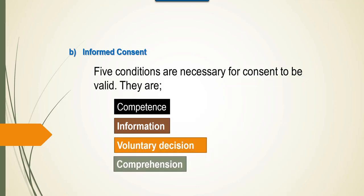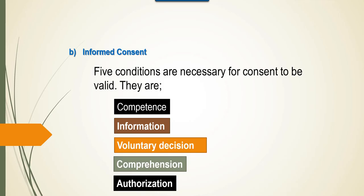The person making the decision to give consent must be able to comprehend or understand the information. The documents about research will naturally contain jargons and technical words, which may lead subjects to believe that the research is an attempt to provide treatment rather than gain knowledge. The person providing consent must agree by communicating his agreement verbally, signing a document, or by making some other sign of authorization. The subjects also should have the right to withdraw from research participation at any time without penalty or loss of benefits.